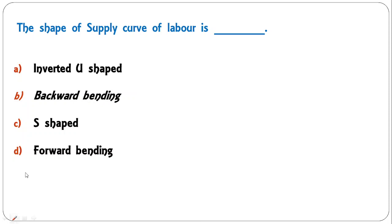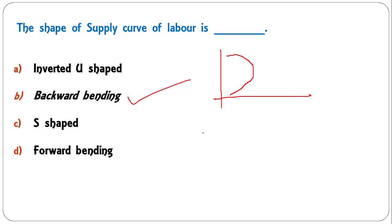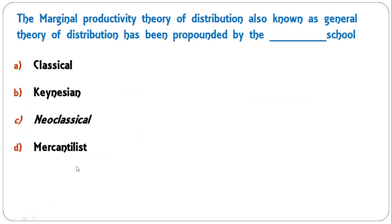The shape of the supply curve of labor is — inverted U-shaped, backward bending, S-shaped, or forward bending? This is popularly known as the backward-bending supply curve of labor. So B is the correct answer. If you want to understand this topic in detail, comment in the comment box and I'll make a video on it.